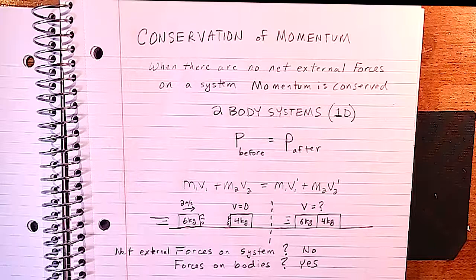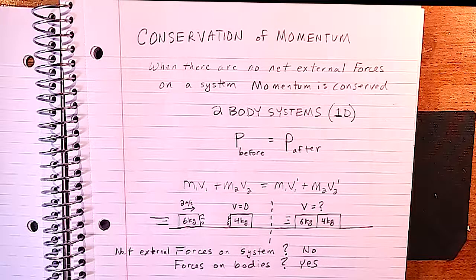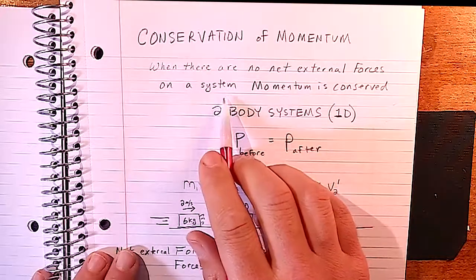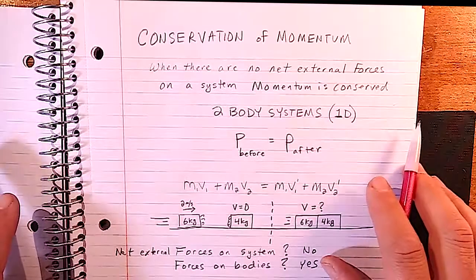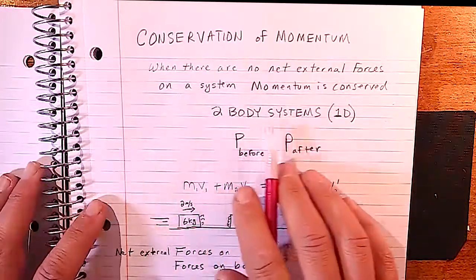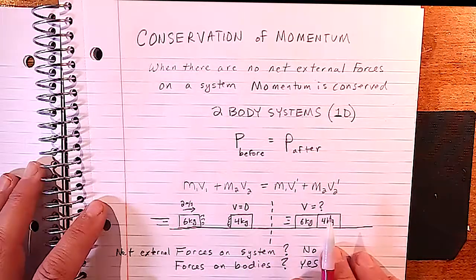Conservation of momentum deals with collisions where one object collides into another — they may bounce off or stick together. In either case, the momentum before the collision equals the momentum after, as long as there are no net external forces on the system. We'll start in one dimension and then move to two-dimensional collisions.